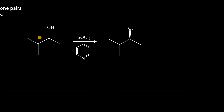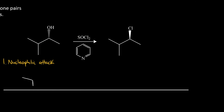This reaction is similar in that we start with the OH group and form a halide that is inverted relative to the OH group. In this case, we use thionyl chloride and pyridine as the base. Just like with PBr3, the OH group, which is electron-rich, can attack thionyl chloride — specifically the sulfur — in the first step. Let's draw our reactant alcohol and thionyl chloride.